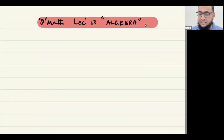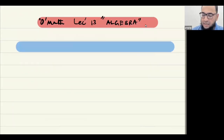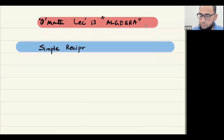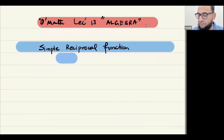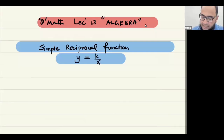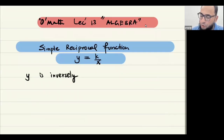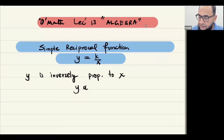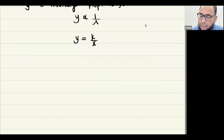Now we should discuss the concept of simple reciprocal graphs. A simple reciprocal function is y equals a constant over x. This is the same thing as saying y is inversely proportional to x, so y equals k over x — that is what we are discussing now.